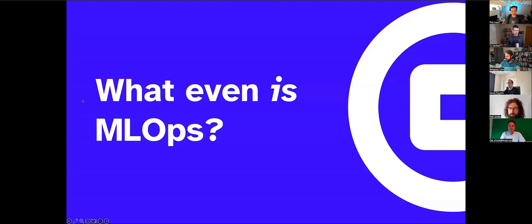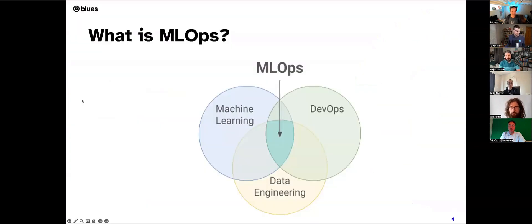Let's start with the level-setting question: what even is ML Ops and why should we care? If you do any Google image search on ML Ops, you'll get tons of Venn diagrams. ML Ops sits at the nexus of machine learning, DevOps, and data engineering. The name itself comes from a combination of ML and DevOps — the data engineering folks were left out.